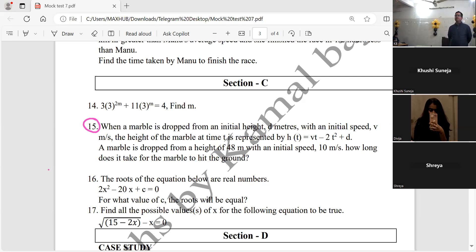When a marble is dropped from an initial height of 3 meters with an initial speed of 3 meters per second, the height of the marble at time t is represented by this formula: height at time t is vt minus 2t square plus d.